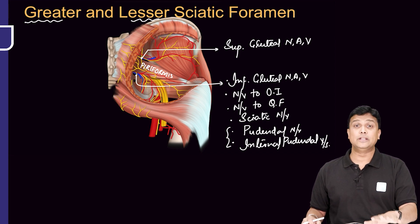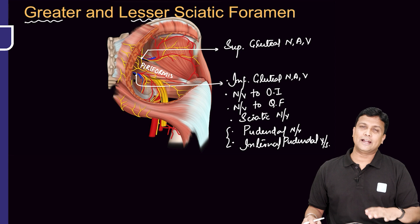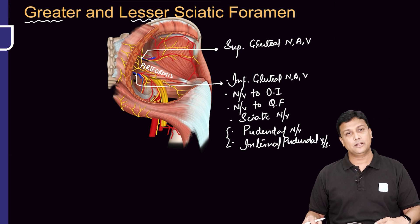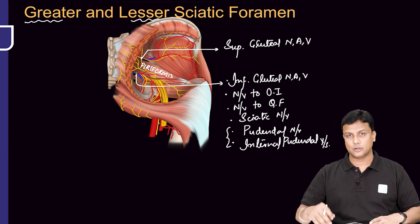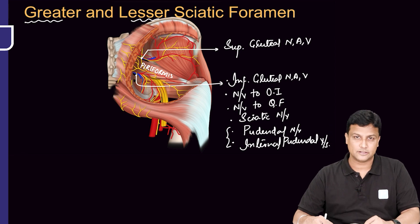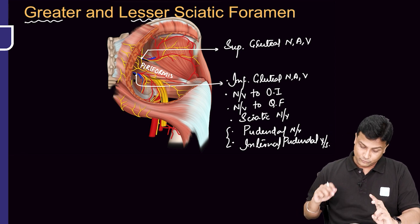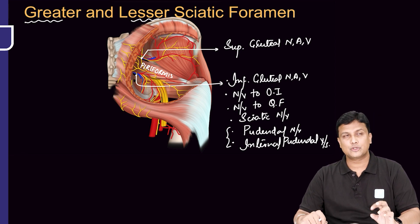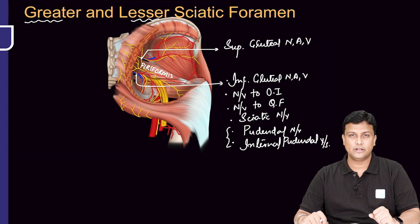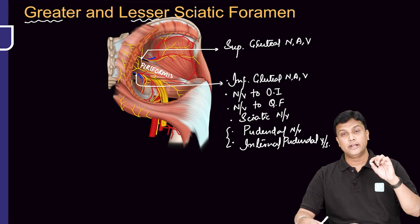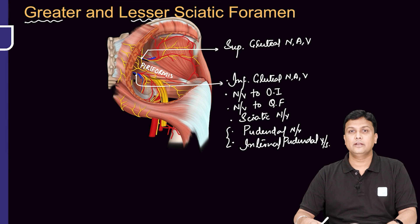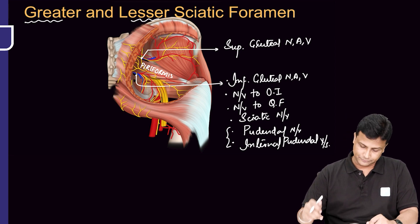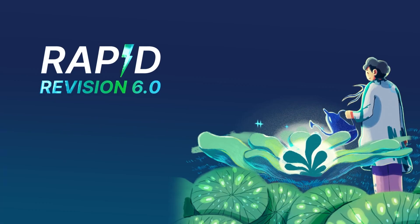You can easily identify the ischial spine and there you can actually block the pudendal nerve. So pudendal nerve block will take place at the ischial spine. To summarize the two exam points: the nerve which is winding around the ischial spine is the pudendal nerve, and the pudendal nerve block is done at the ischial spine.